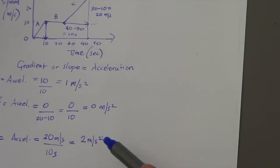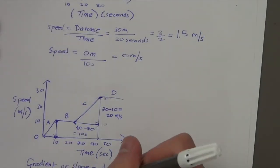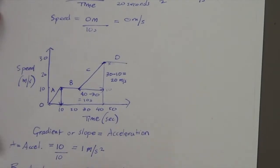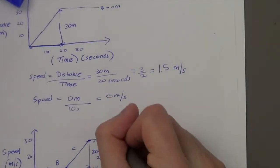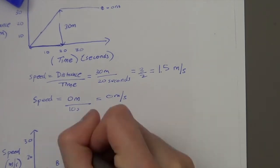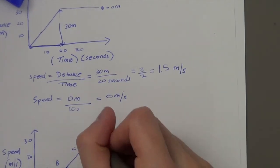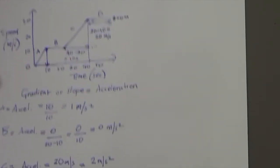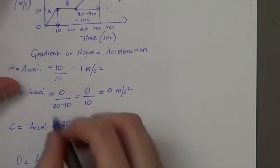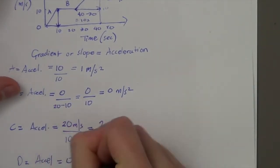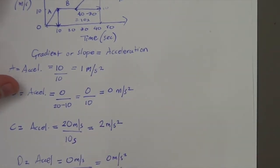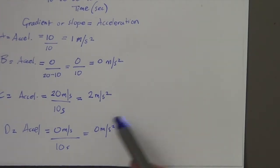The acceleration is greater in C compared to A. For line D, graphically you can see there's no change in speed — it's 0 metres change. So the acceleration in D is 0 metres per second over 10 seconds, which is 0 metres per second squared. That's how you calculate acceleration on a speed-time graph.